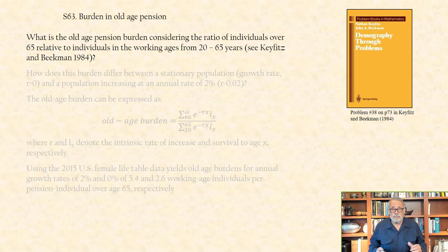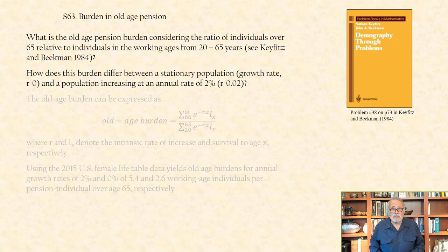How does this burden differ between a stationary population with a growth rate of R equals 0, and a population increasing at an annual rate of 2%, that is, R equals 0.02?